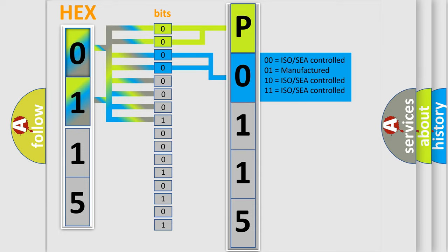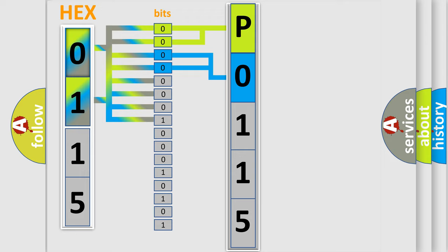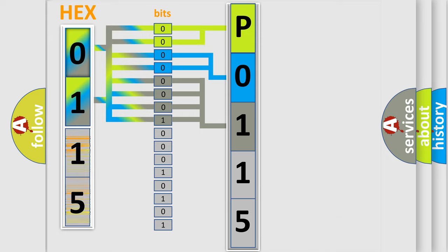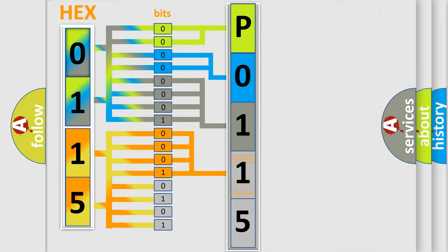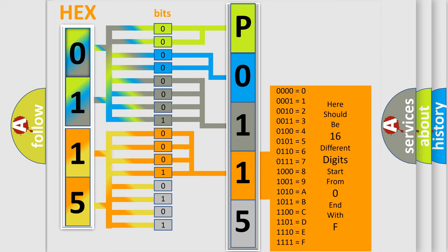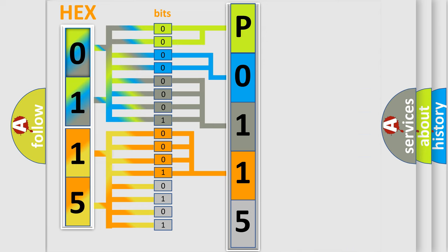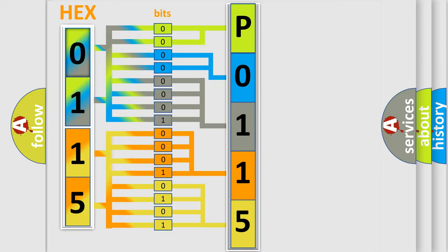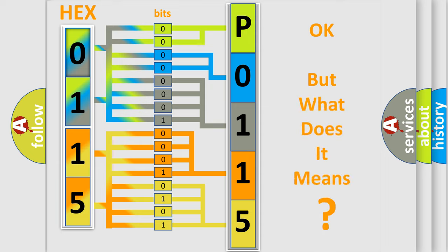The last bits of the first byte define the third character of the code. The second byte is composed of a combination of eight bits. The first four bits determine the fourth character of the code, and the combination of the last four bits defines the fifth character. A single byte conceals 256 possible combinations. We now know how the diagnostic tool translates the received information into a more comprehensible format.